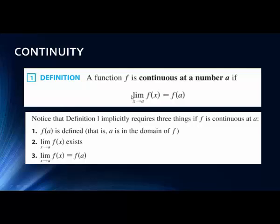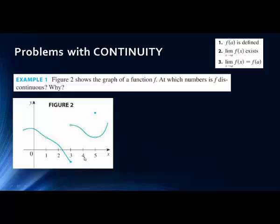The second condition is that the limit must exist — the limit as x goes to a has to exist. And then the third condition is that the limit as x goes to a of f(x) equals f(a). This is just saying that the limit is exactly the value of the function.